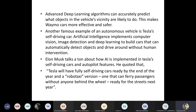Advanced deep learning algorithms can accurately predict what objects in the vehicle's vicinity are likely to do, making Waymo cars more effective and safer. Deep learning is mostly focused toward object detection — detecting road, buildings, trees, other vehicles, pedestrians, and so on. The system can also predict the speed of other vehicles and whether they are approaching the autonomous vehicle.